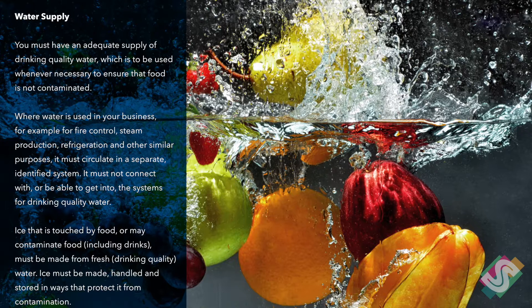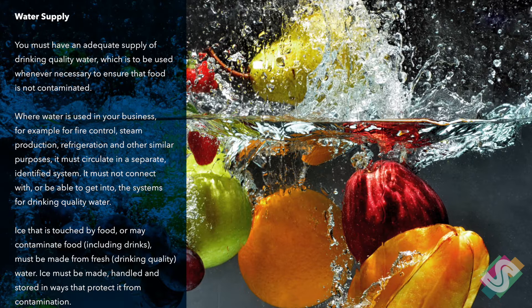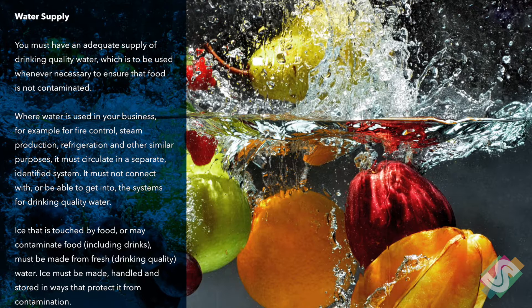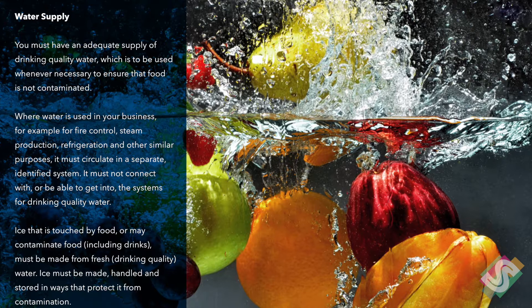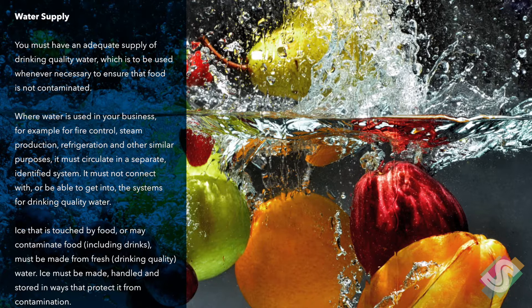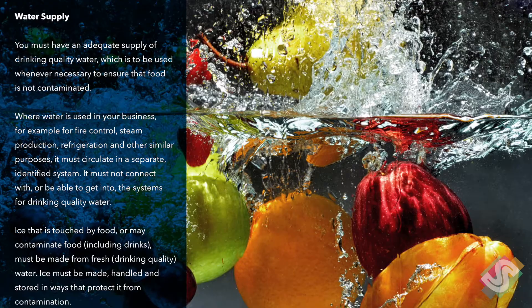Water Supply: You must have an adequate supply of drinking quality water, which is to be used whenever necessary to ensure that food is not contaminated. Where water is used in your business for purposes such as fire control, steam production, refrigeration and other similar purposes, it must circulate in a separate, identified system. It must not connect with, or be able to get into, the systems for drinking quality water. Ice that is touched by food, or may contaminate food including drinks, must be made from fresh drinking quality water. Ice must be made, handled and stored in ways that protect it from contamination.